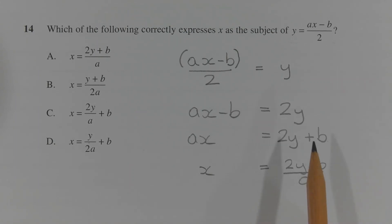And finally, I'm going to divide both sides of the equation by a, which means dividing the entire right hand side by a. So we end up with x equals 2y plus b all over a.